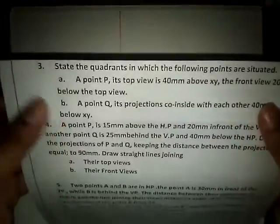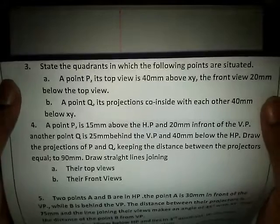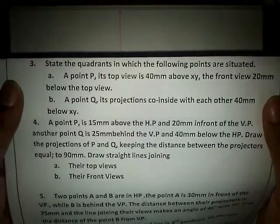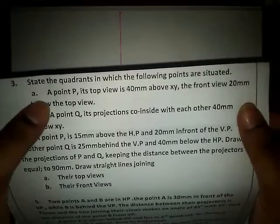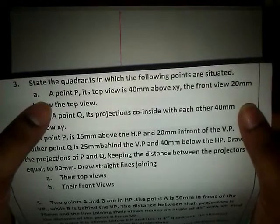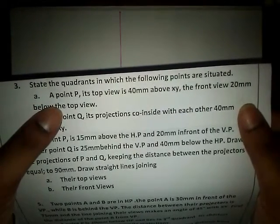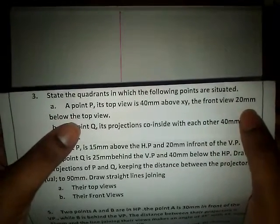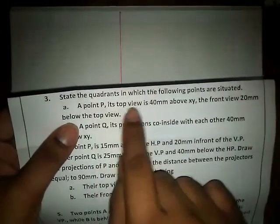The question states: state the quadrants in which the following points are situated. The first one is point P. Its top view is 40 mm above the XY line, and the front view is 20 mm below the top view.